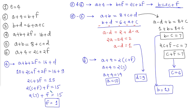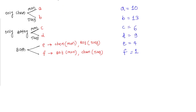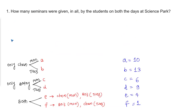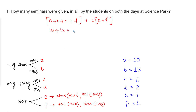Using equation 4: 10 plus (2C plus F) plus 2F equals 16 plus 9, so 2C plus 3F equals 15. Rewriting: 2(C plus F) plus F equals 15, so 2 times 7 plus F equals 15, giving F equals 1. Then C equals 7 minus 1 equals 6, and B equals 2(6) plus 1 equals 13. All variables solved: A=10, B=13, C=6, D=9, E=4, F=1.